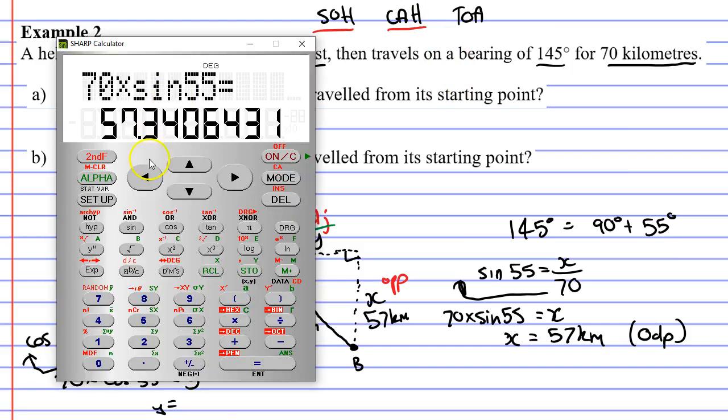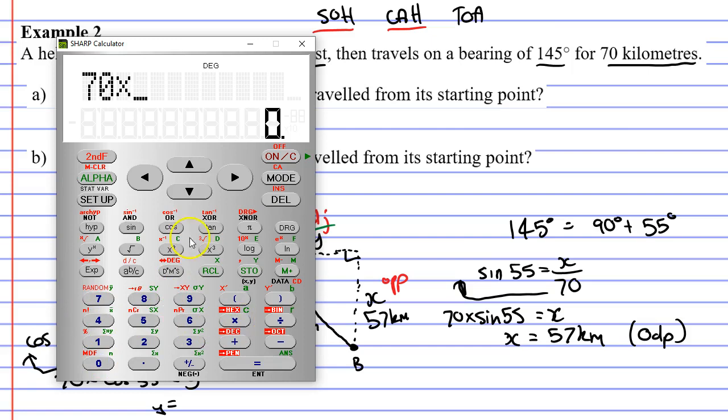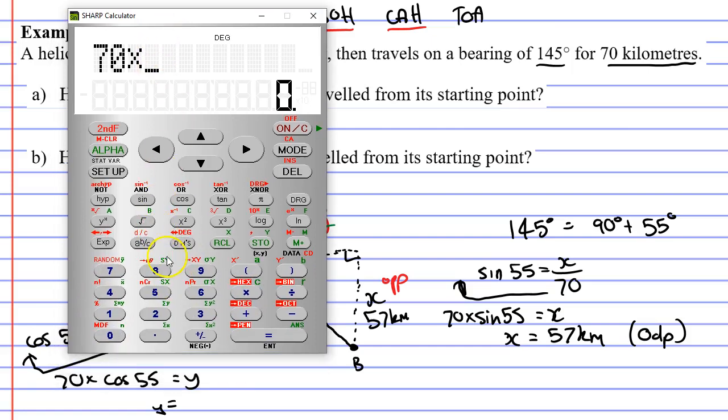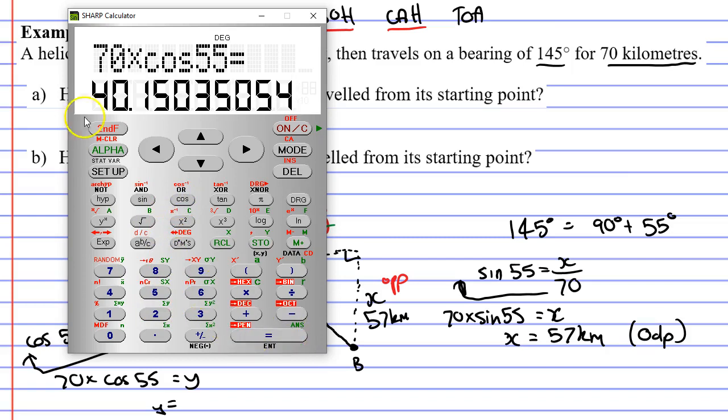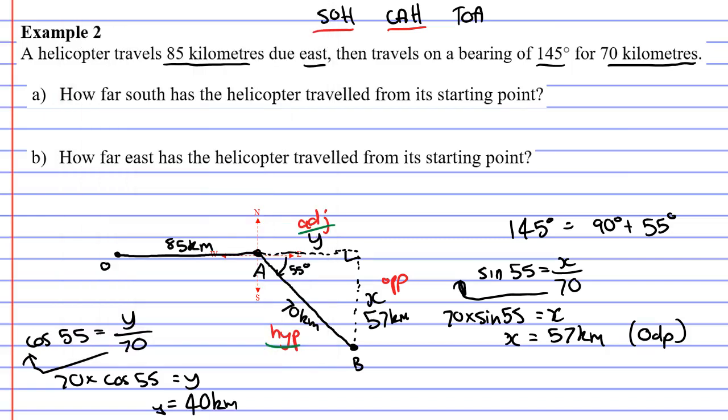Let's work this out on the calculator. 70 times cos 55 equals. Rounding to the nearest whole kilometer, we'll say 40 kilometers. We've rounded it to zero decimal places, which means Y is 40.